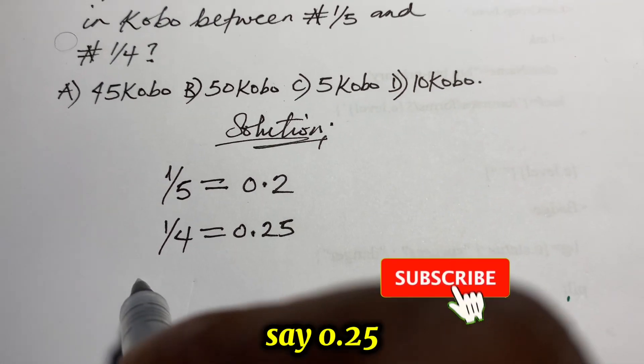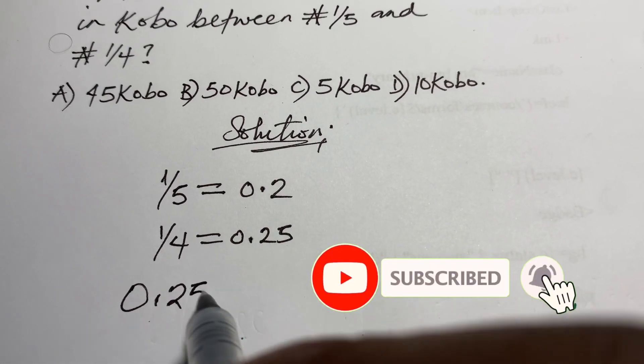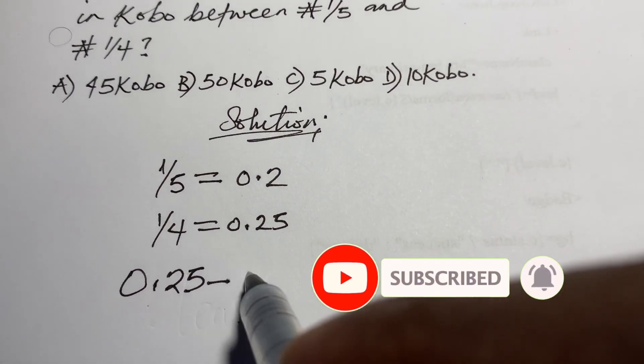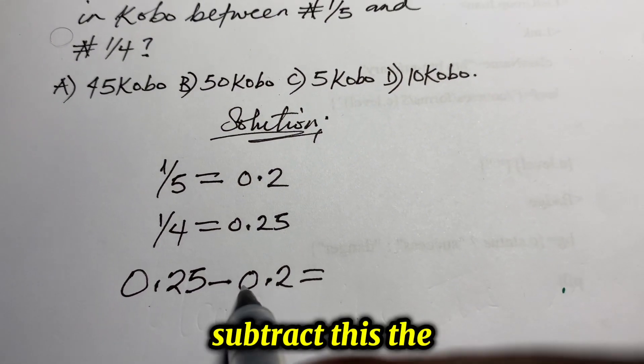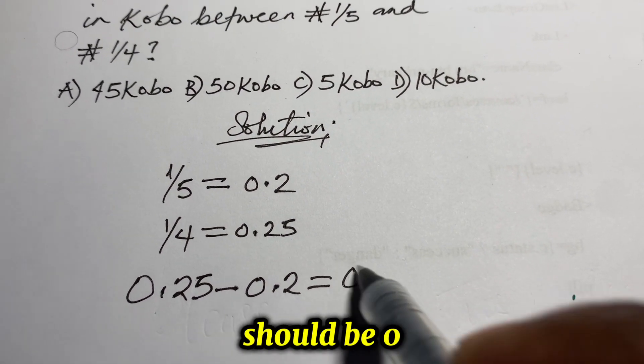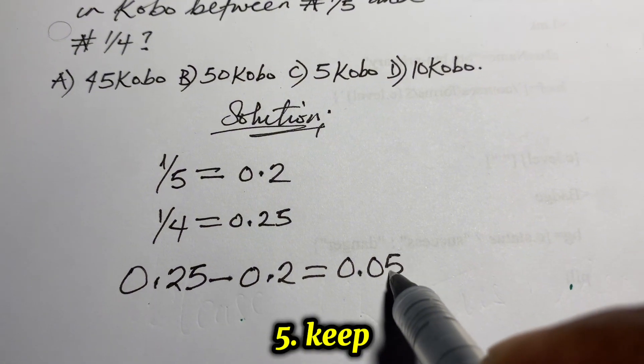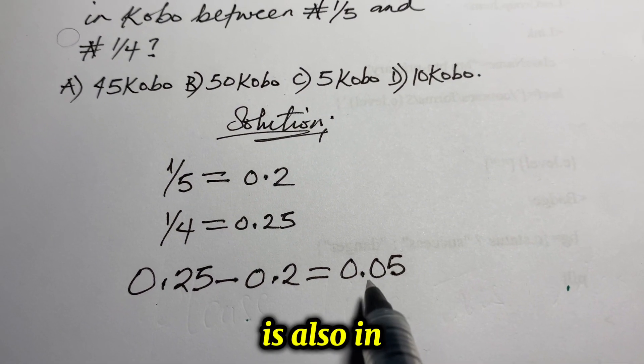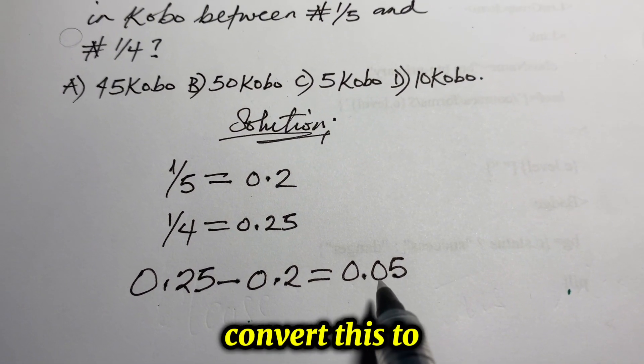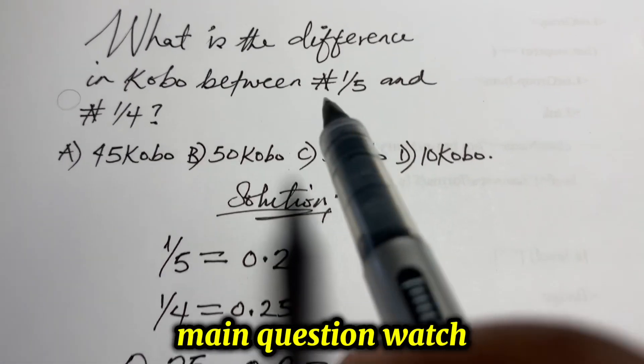Alright, so what we need to do is to say, 0.25, that's the difference we're working on, minus 0.2, and if you subtract this, the result you have should be 0.05. Keep in mind, this is also in Naira. We need to convert this to kobo. That is the main question.